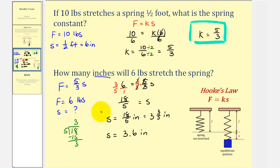All these lengths are equivalent. Let's determine if our answer makes sense. Notice we were told that a ten-pound weight stretches the spring six inches. So if we attach a six-pound weight, which is less, notice how it does stretch the spring less. It only stretches three and three-fifths inches, which does make sense. I hope you found this helpful.